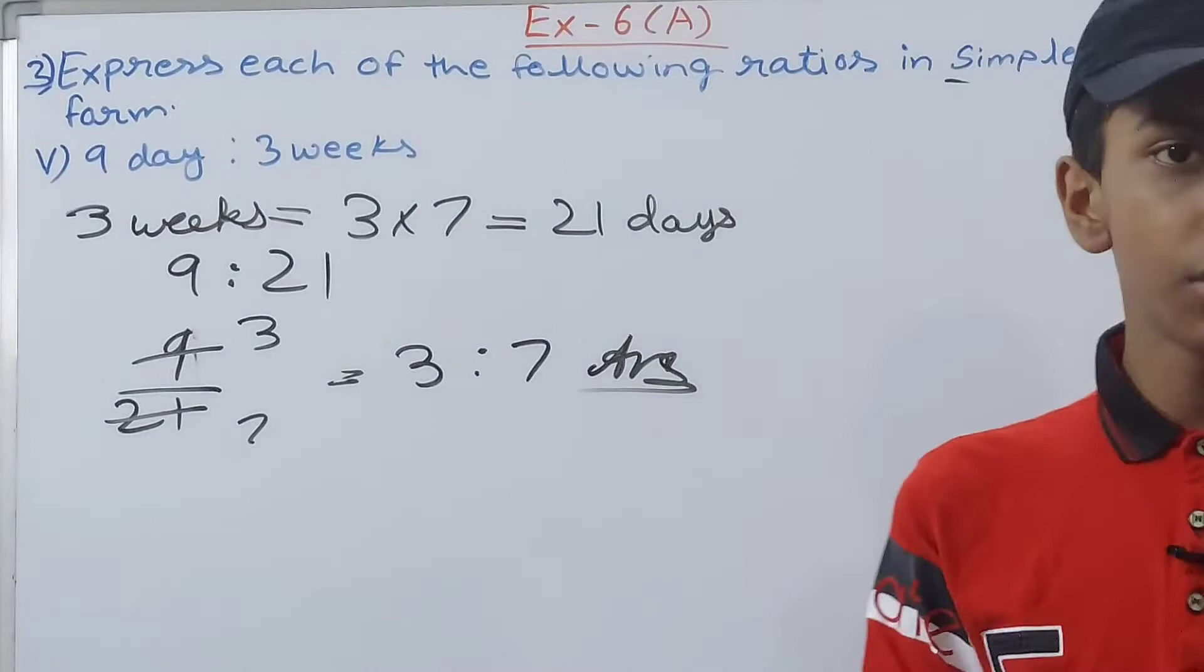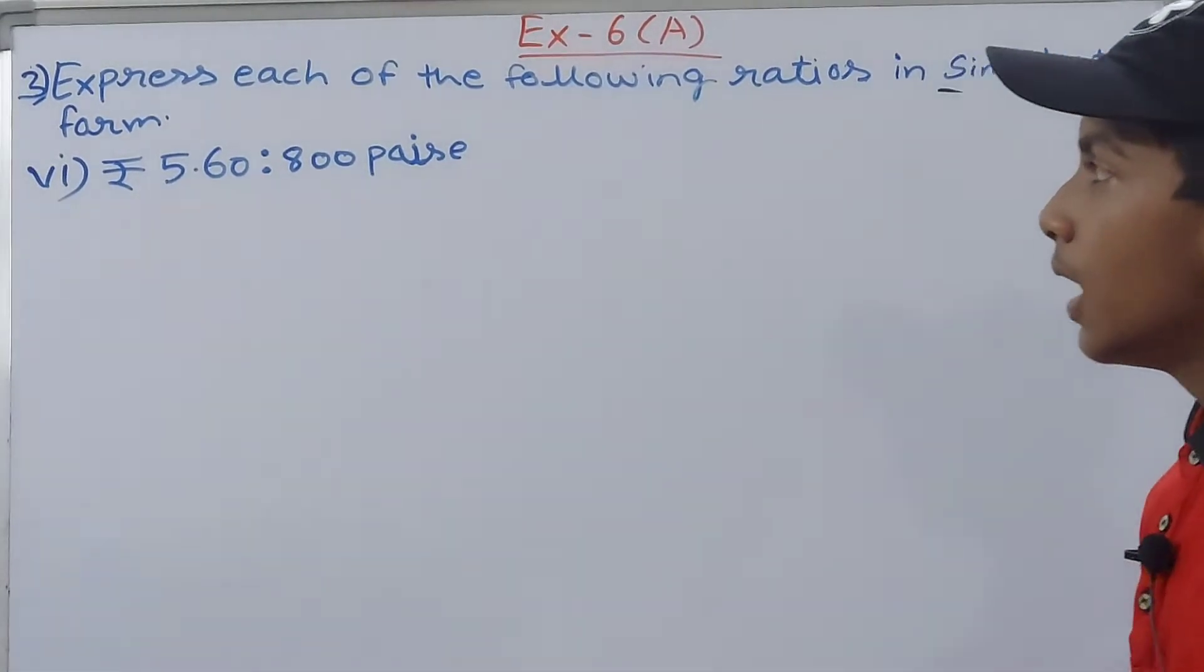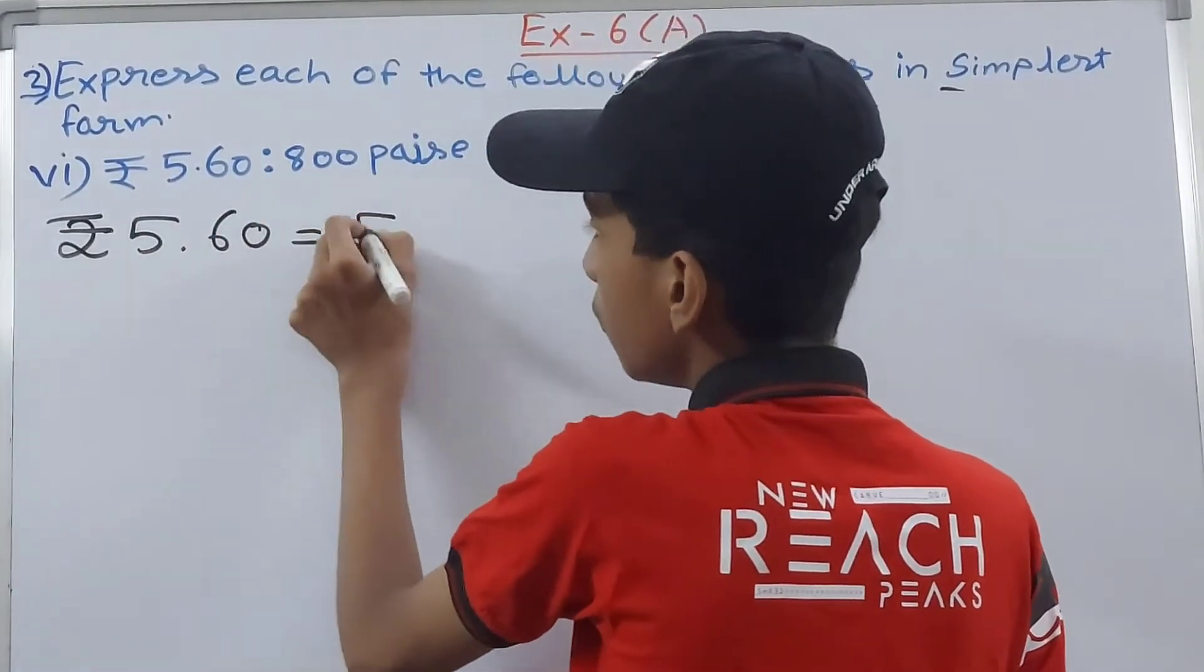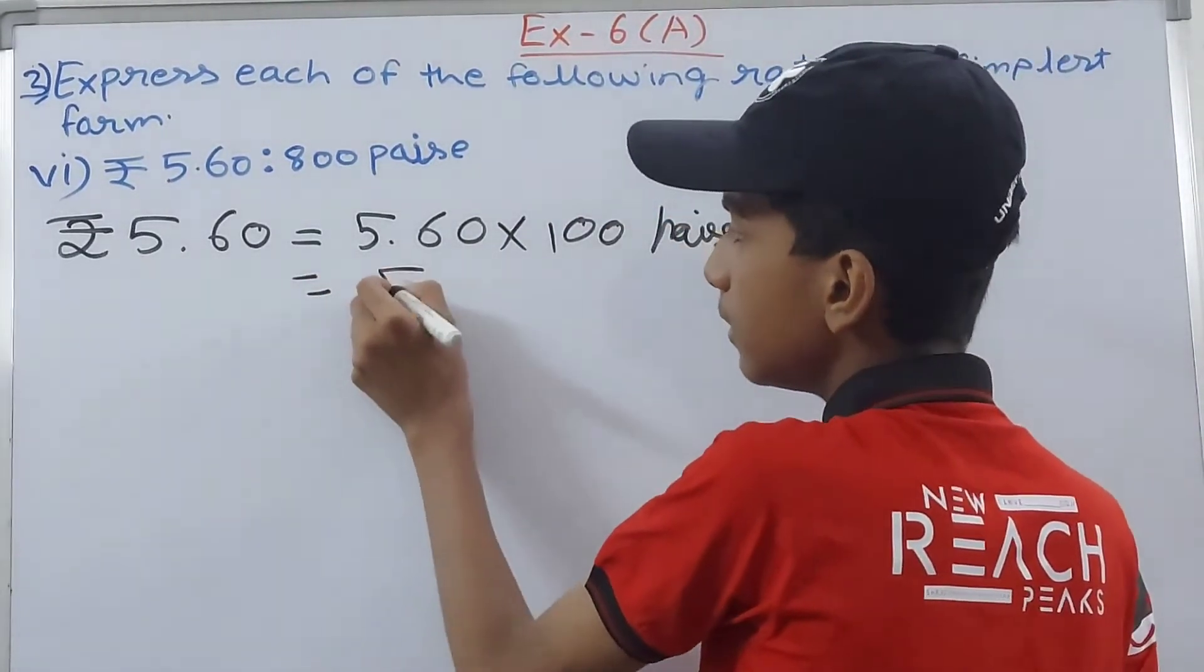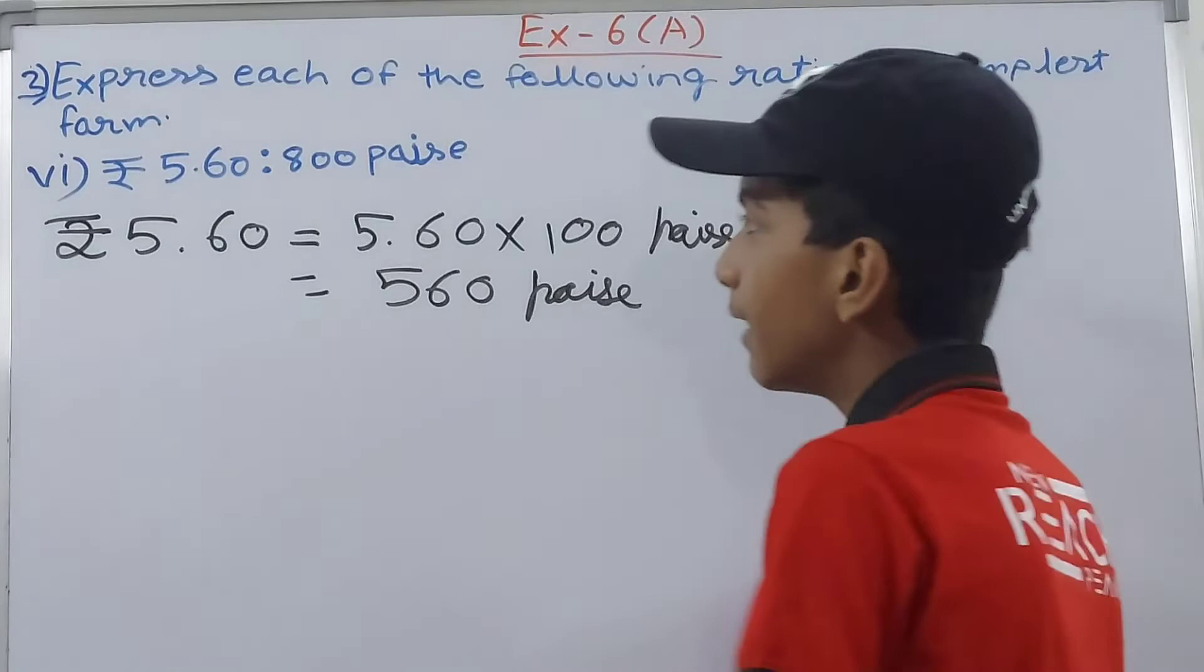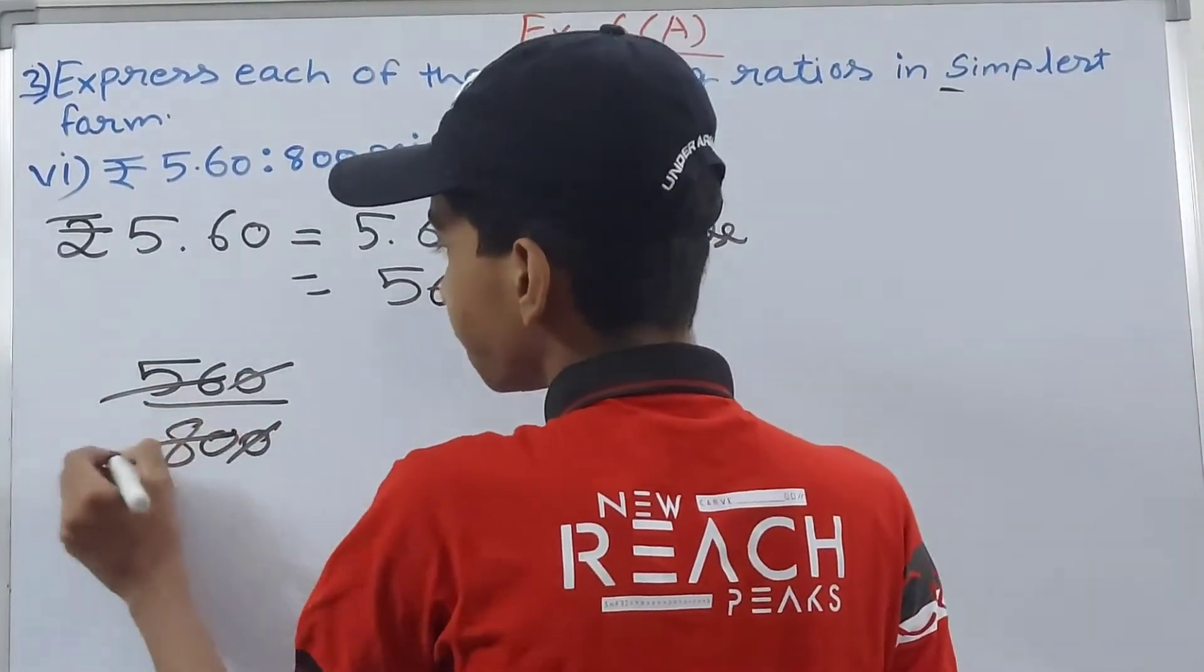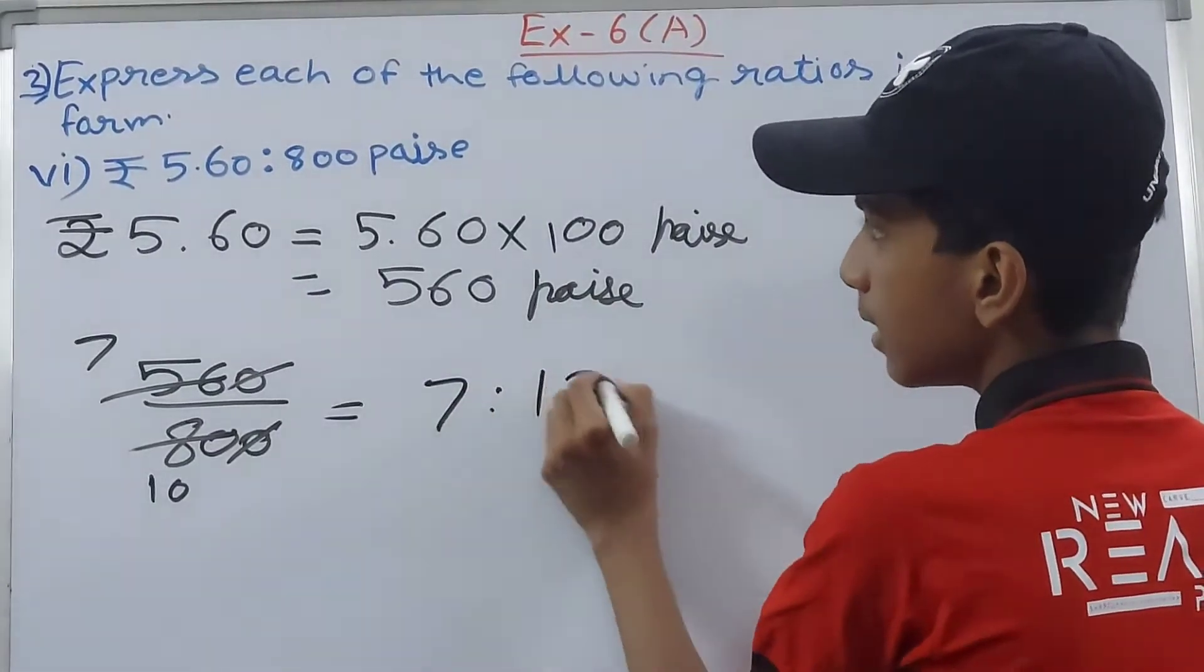Next part is rupees 5.60 is to 800 paise. Convert 5.60 rupees into paise: 5.60 into 100 equals 560 paise. Now we can make the ratio: 560 upon 800. Cut this zero, cut this - 56 and 80 by 8, which gives 7 and 10. It cannot be cut further, so we'll have 7 is to 10. This is our answer.